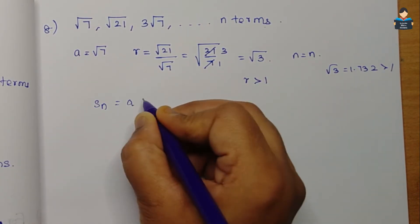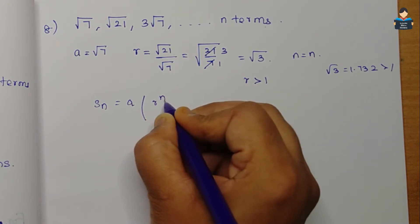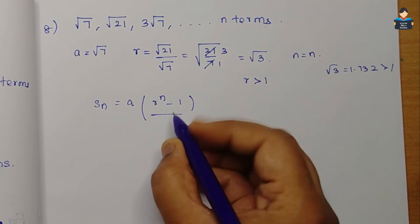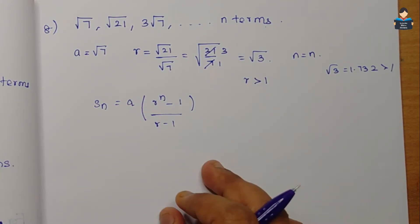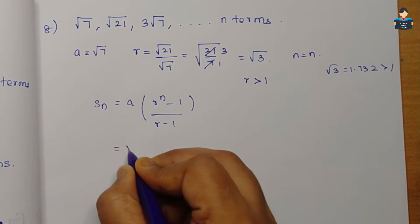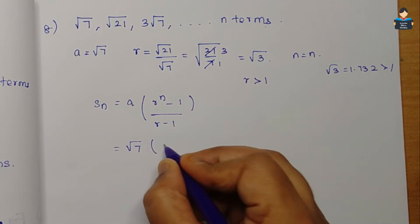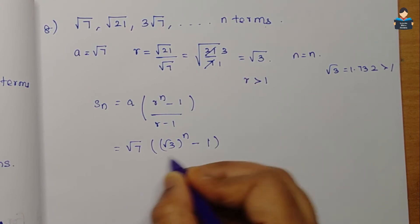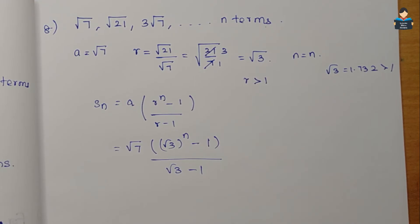For the 8th question, the GP involves roots. Using the formula Sn = a × (r^n − 1)/(r − 1). Substituting: a = √7, r = √3. So Sn = √7 × ((√3)^n − 1) / (√3 − 1).